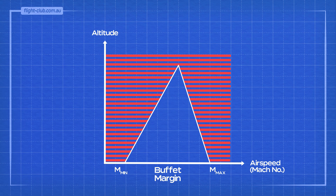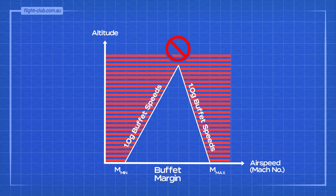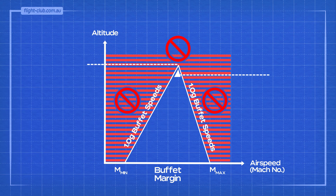It is not possible to fly higher under 1G conditions than the altitude where both Mach numbers are equal. Flying slower or faster than the speed shown will stall or buffet the aeroplane. In fact, even manoeuvring the aeroplane will initiate a stall because manoeuvring increases the effective weight and increases the stall speed. This altitude is called the aerodynamic ceiling or coffin corner.